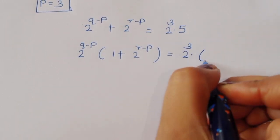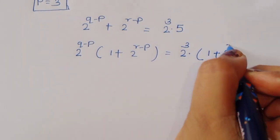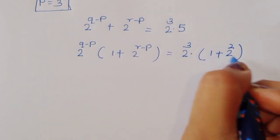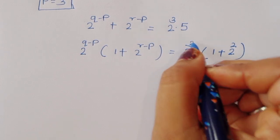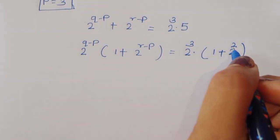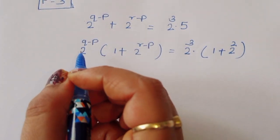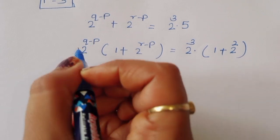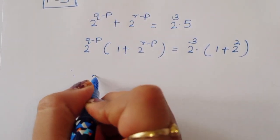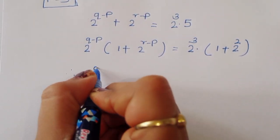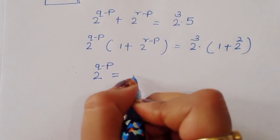We can write 5 as 1 plus 2 squared, since 4 plus 1 equals 5. Comparing both terms, 2 power Q minus P equals 2 power 3.